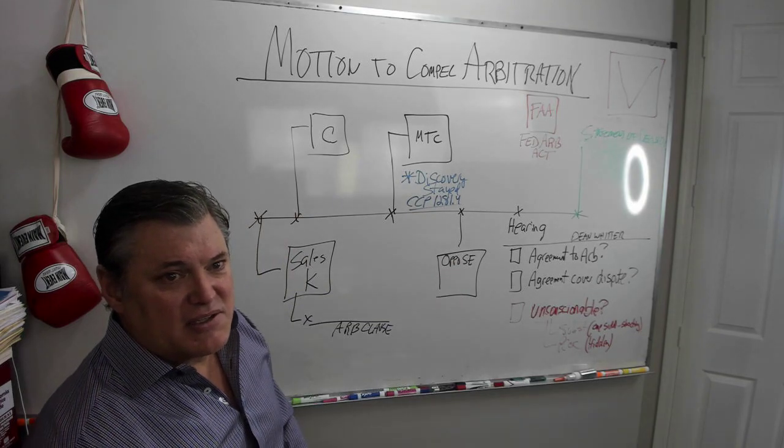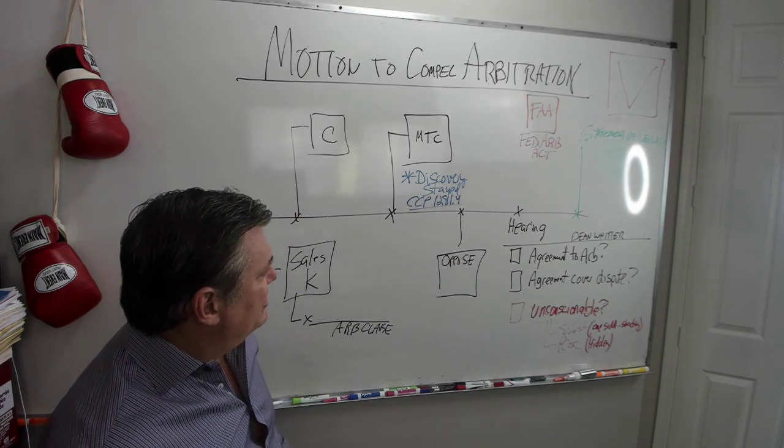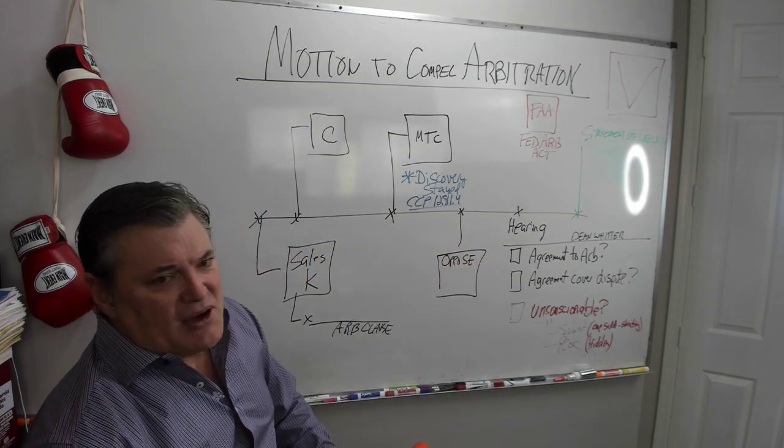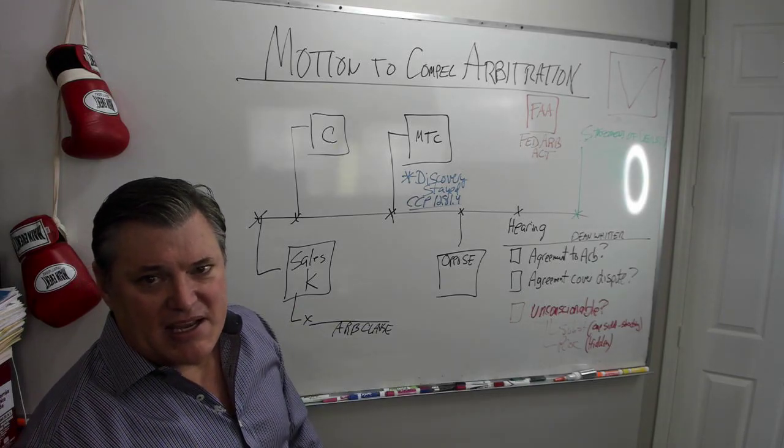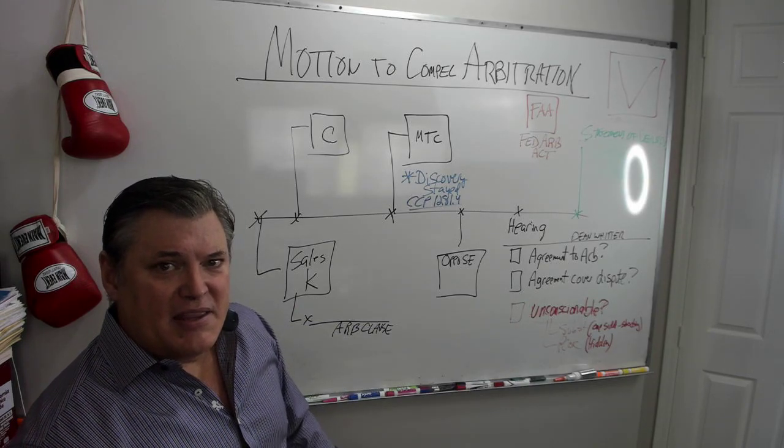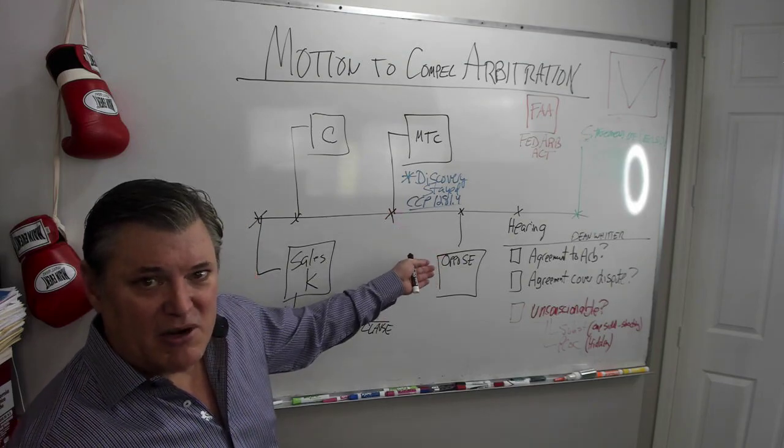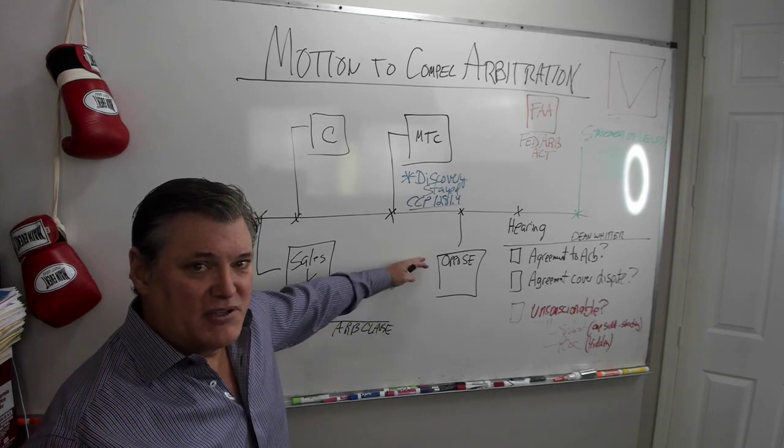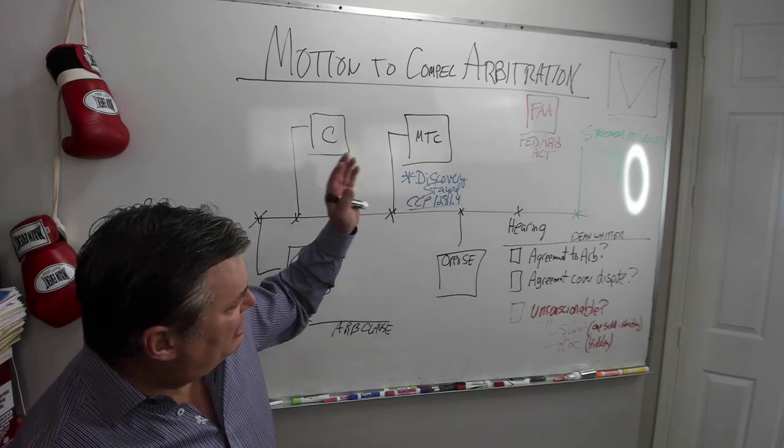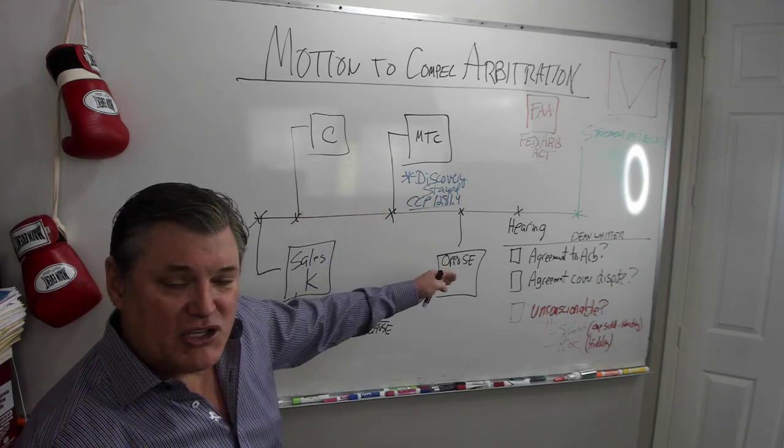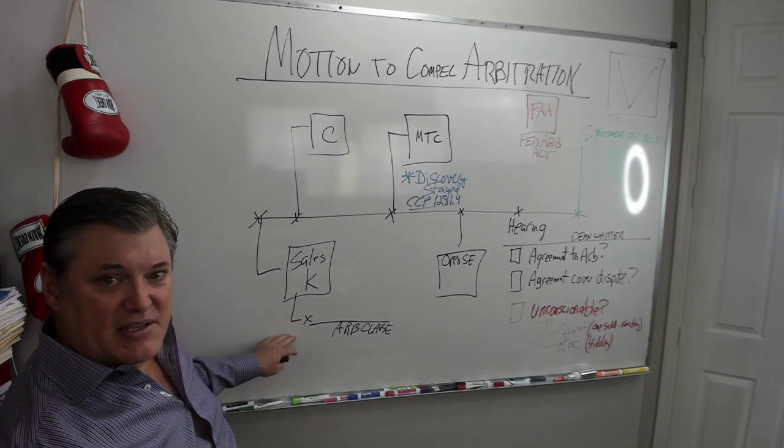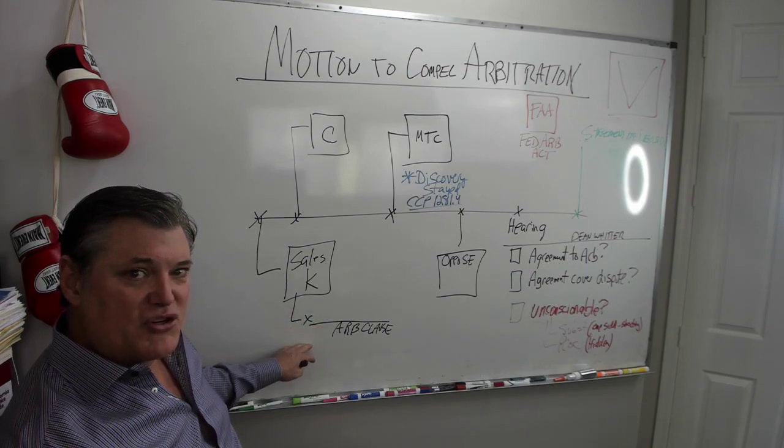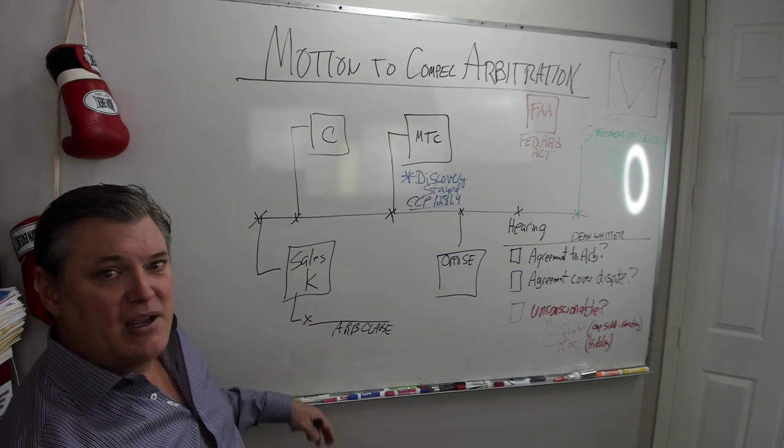They file their motion, you get to oppose, you get to raise the various issues. There's a case called Dean Witter that says, look, in order to compel an arbitration, two things. This is what you would be wanting to dispute. Is there an agreement to arbitrate? Did we agree at the time we were contracting? Was there a contract to do it? Remember, a contract requires offer, acceptance, consideration.